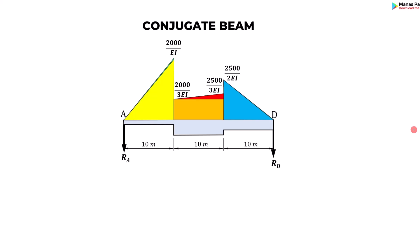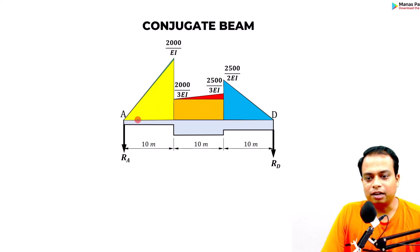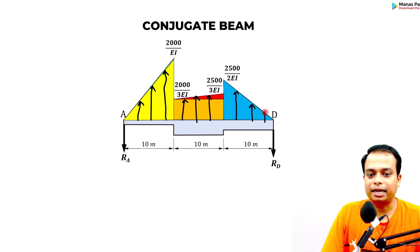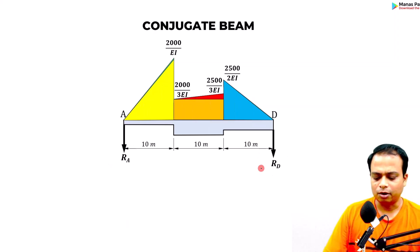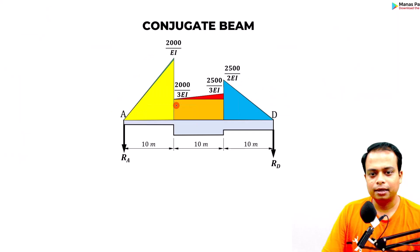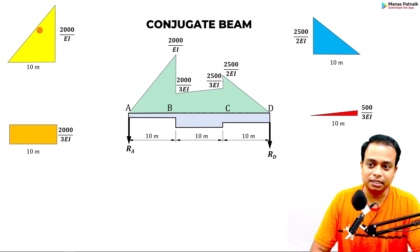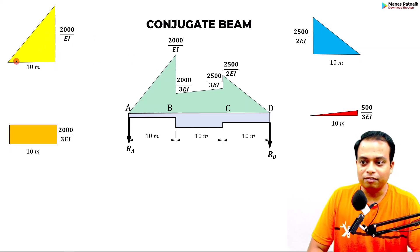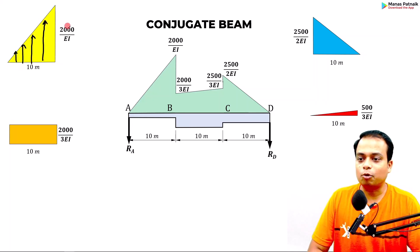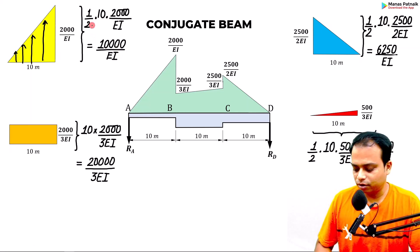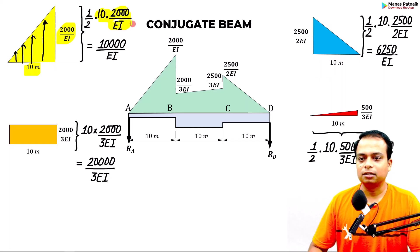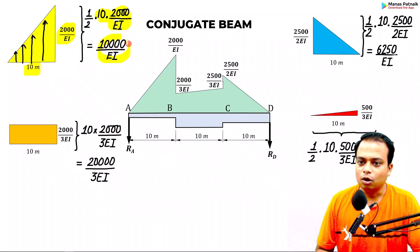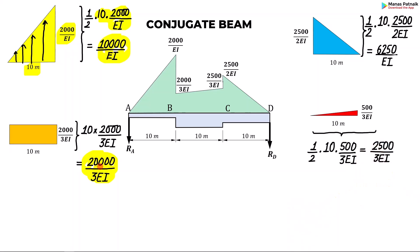The geometry is divided into four shapes: three triangles and one rectangle. Since all bending moment values are positive, all the loads point in the upward direction, and hence the reactions on the conjugate beam will be in the downward direction. Exploding and analyzing each area: equivalent point loads are calculated as half × base × height for triangles, and base × height for the rectangle.